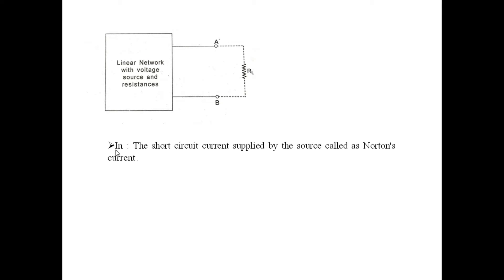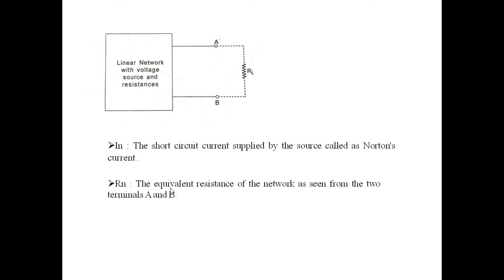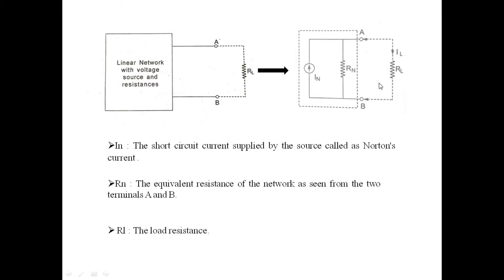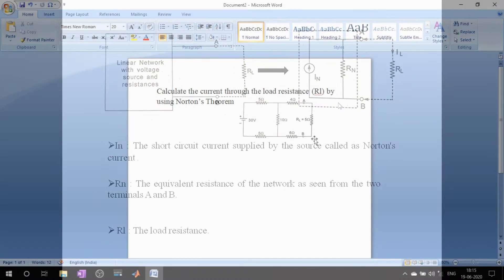I_N is the short-circuit current supplied by the source, called Norton's current. R_N is the equivalent resistance of the network as seen from terminals A and B. R_L is the load resistance. By applying Norton's theorem, this circuit gets converted into a current source I_N in parallel with resistance R_N supplying the load.